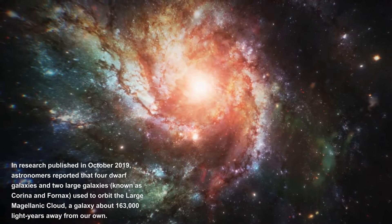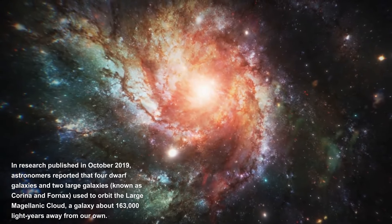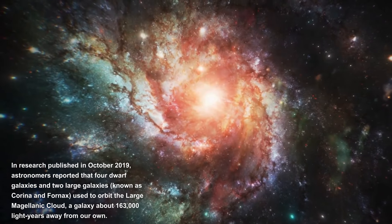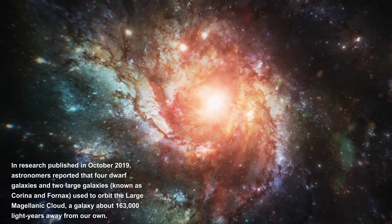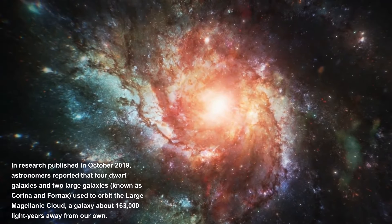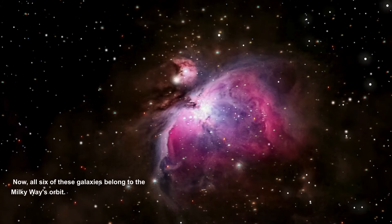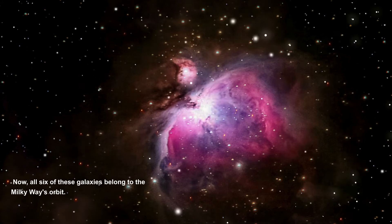Home Sweet Home. In research published in October 2019, astronomers reported that four dwarf galaxies and two large galaxies, known as Carina and Fornax, used to orbit the Large Magellanic Cloud, a galaxy about 163,000 light years away from our own. Now, all six of these galaxies belong to the Milky Way's orbit.